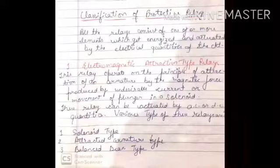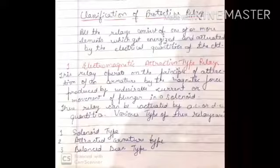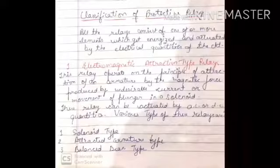The first classification is the electromagnetic attraction type relay. In this relay, the armature is attracted by the magnetic force, and the magnetic force is produced by the undesirable current and the movement of a plunger in a solenoid. These relays can be actuated by both AC and DC quantities.